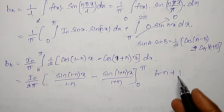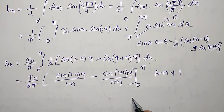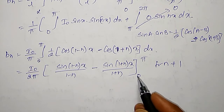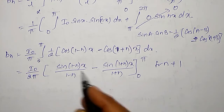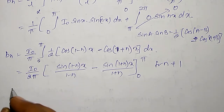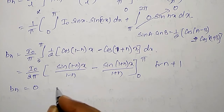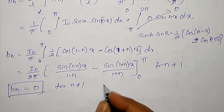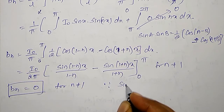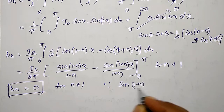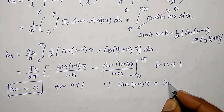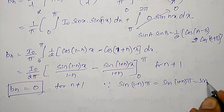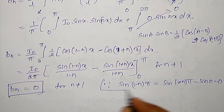Since sin(1−n)π = 0 and sin(1+n)π = 0, and sin 0 = 0, all terms vanish. Therefore Bₙ = 0 for n ≠ 1.